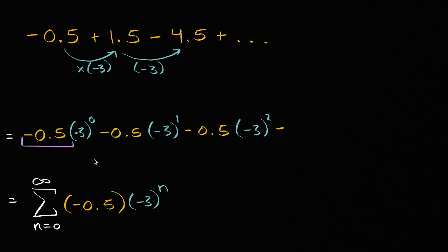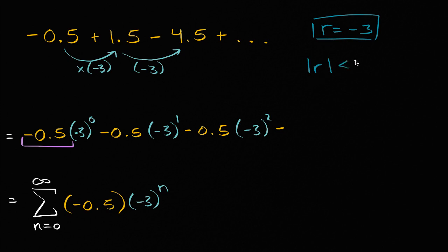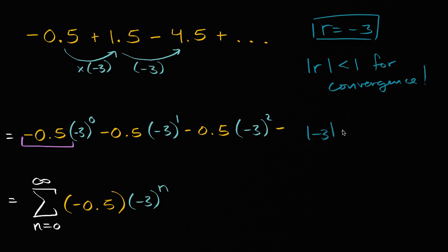So we've been able to rewrite this in different ways, but let's actually see if we can evaluate this. We have a common ratio of negative three, so our r here is negative three. In order for this to converge, the absolute value of the common ratio needs to be less than one. The absolute value of negative three is equal to three, which is definitely not less than one. So this series will not converge.